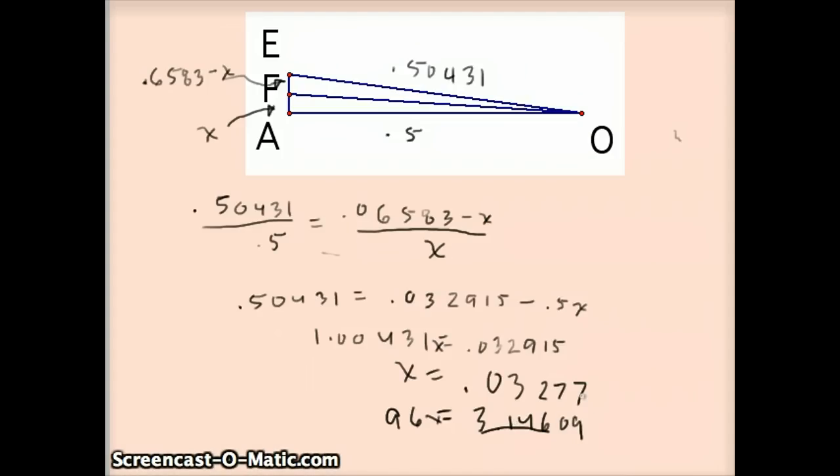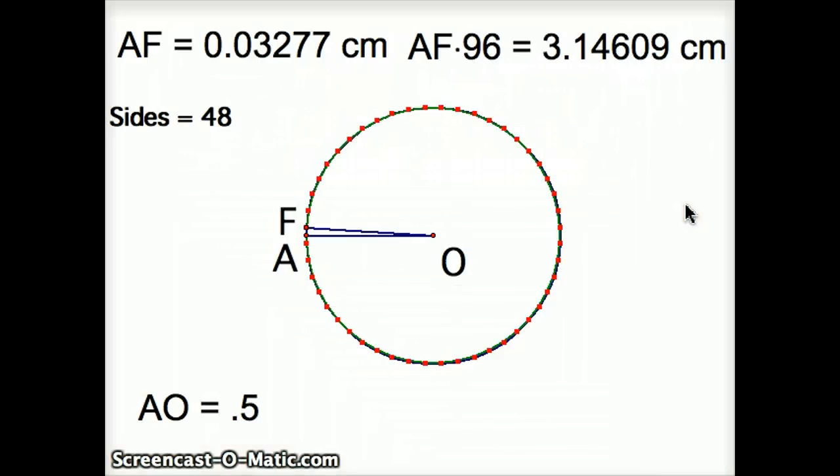Well, he's going to go one more time, and I'm going to take you through the calculations on this. He's calculated out AF to be 0.03277, which means the perimeter of this 48-gon is 3.14609, but he's not going to stop there. He actually isn't going to stop until he shows that it's slightly less than 22 over 7. And that's going to require him to go one more step and to increase the number of sides to 96.